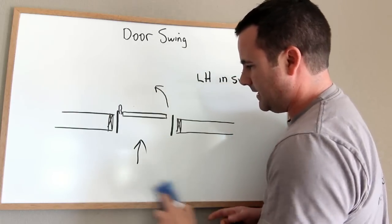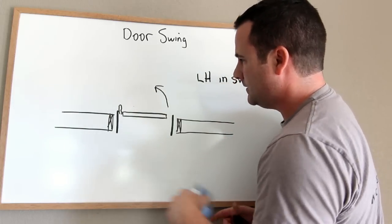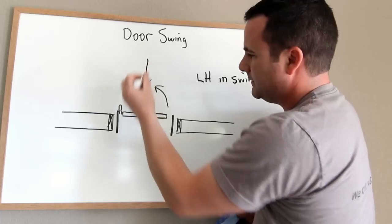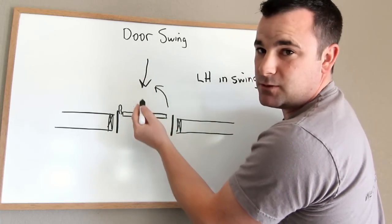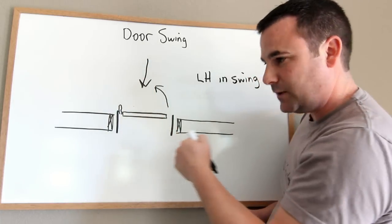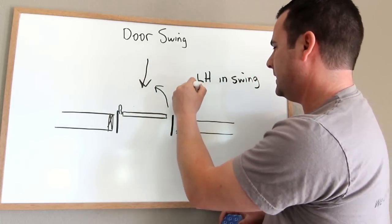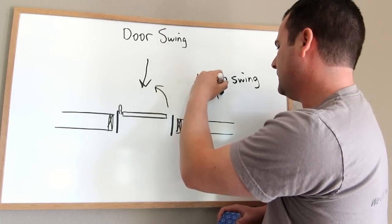If you're standing on the other side, looking at it, hinges are on the right, swings toward you, so it's a reverse. It's swinging toward you, so that's a right hand reverse.